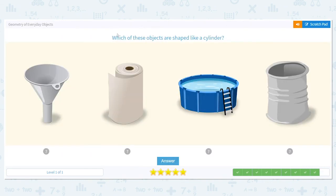Let's do one more. Which of these are shaped like a cylinder? There are a few of them. Is it the funnel? It's not the funnel. What shape is the funnel? That's more like a cone. How about the paper towels? Are they like a cylinder? Yes. What about a pool? Yes. How about this can? Yes. Nice job.